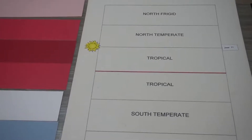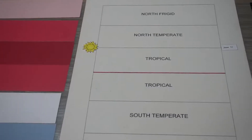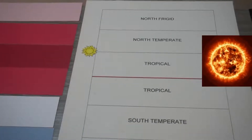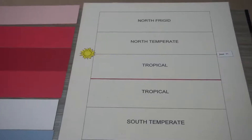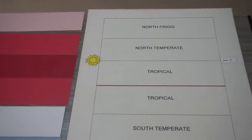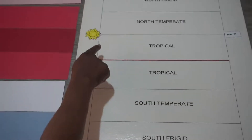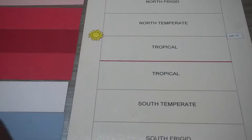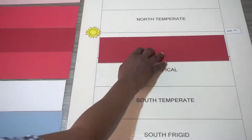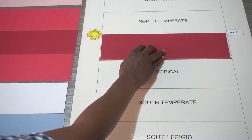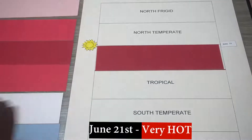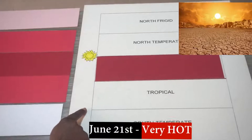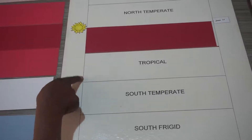June 21st is very hot — actually very very hot. So I'm going to put my dark red strip here, because we know that where we live on June 21st is very very hot. And we know that those perpendicular rays just pass through here.